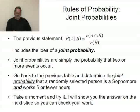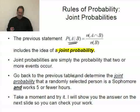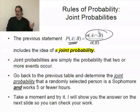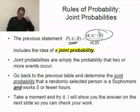Now, this previous statement, this probability of A given B, includes in it the idea of a joint probability. And the joint probability is simply the probability that two or more events occur. In this case, the two events were both they were a freshman and they worked more than 20 hours.